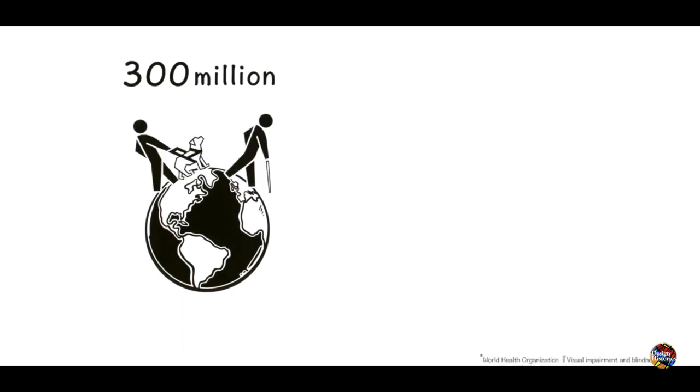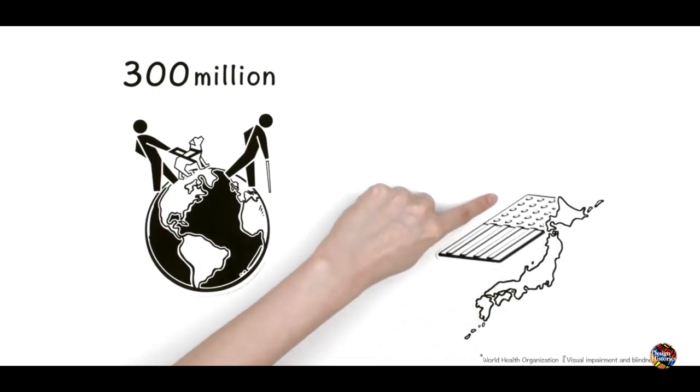Worldwide, there are around 300 million visually impaired people. No wonder other countries quickly adopted this highly effective Japanese invention.